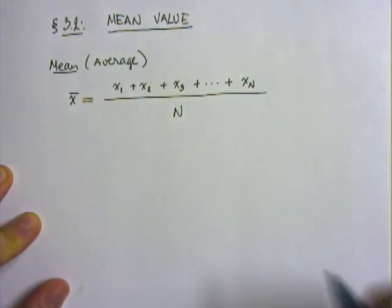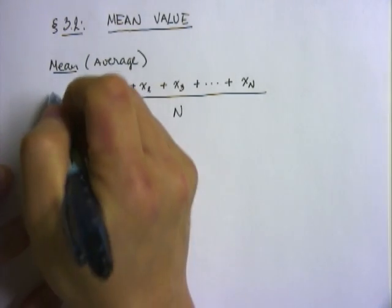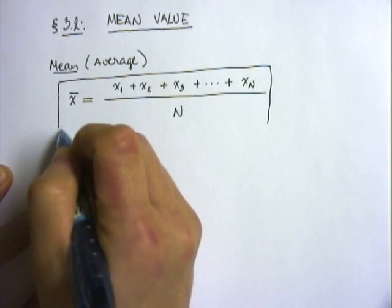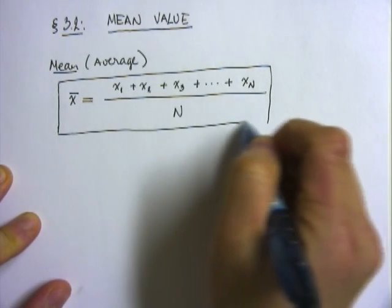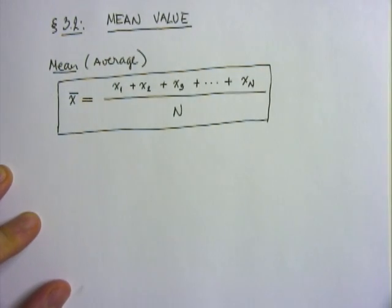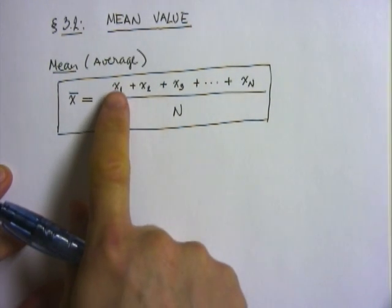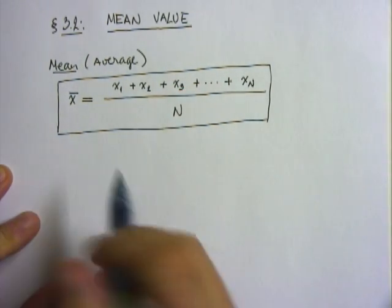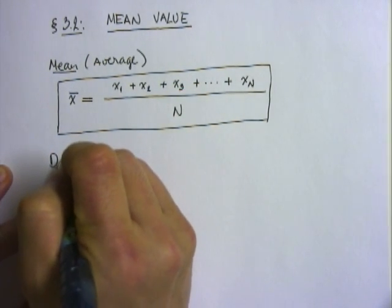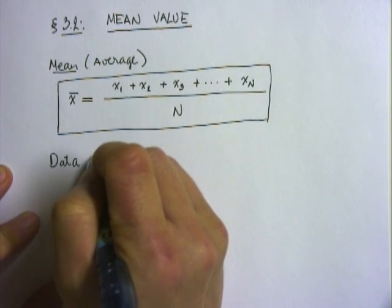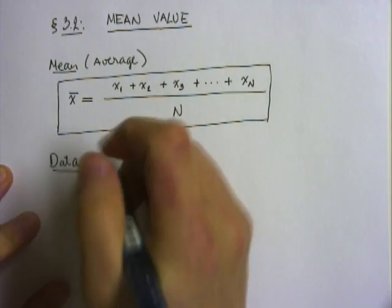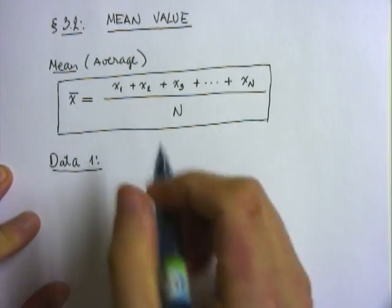But now, finding the mean value this way can be long, because a lot of times our data set will contain repeats, lots of repeats. So who knows that x1, x2, x3 are all identically the same values. So if you look into data set one, for example, let's learn how to find a mean value.